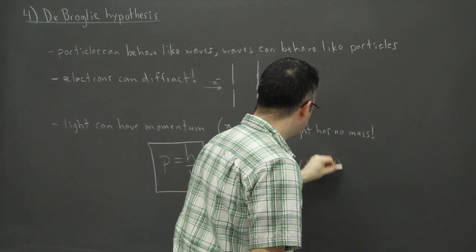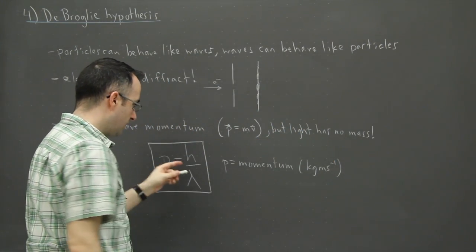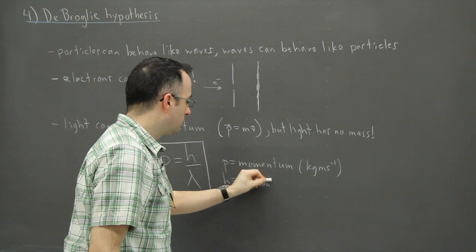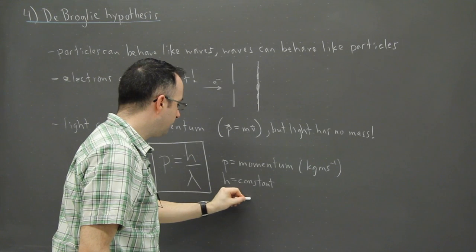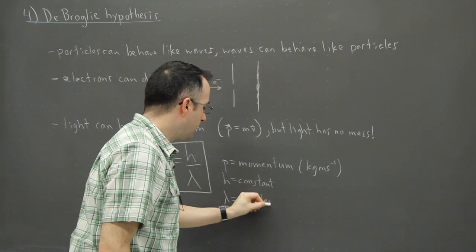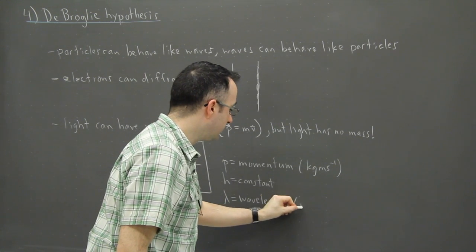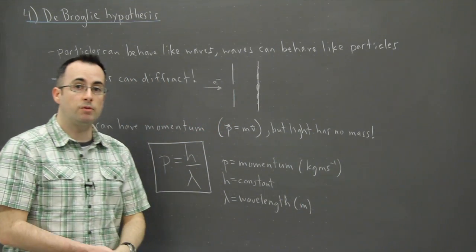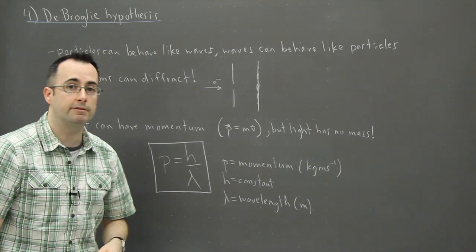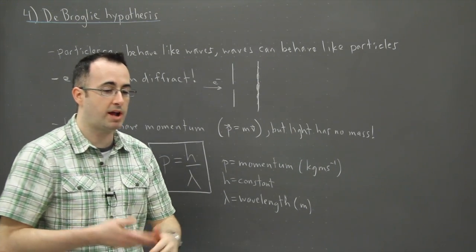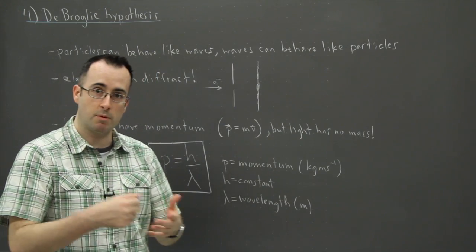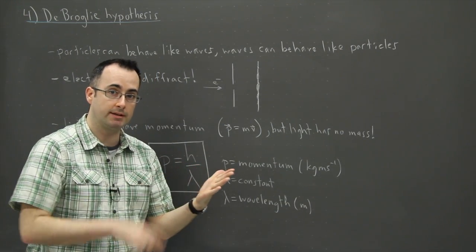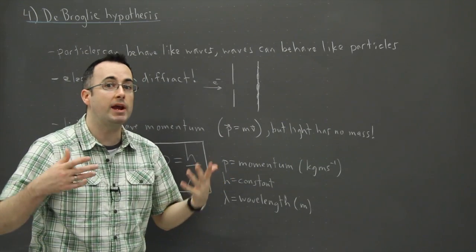This is sometimes called the de Broglie equation: P = h over lambda. P is the momentum, measured in kilogram meters per second. H is Planck's constant, and lambda is the wavelength. So if we know the wavelength — the color of light, measured in meters — we can know how much momentum it has. Momentum means you can actually transfer force from one thing to another.